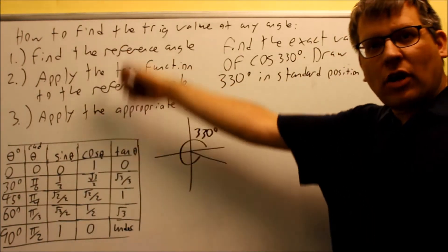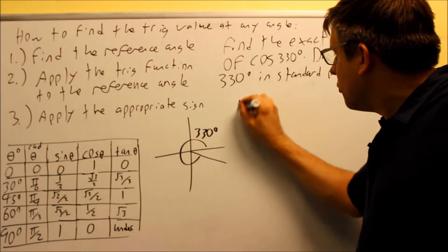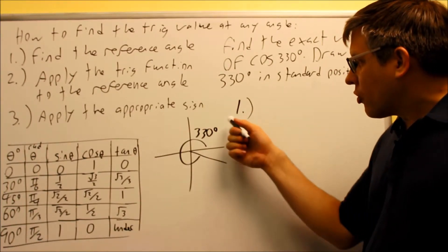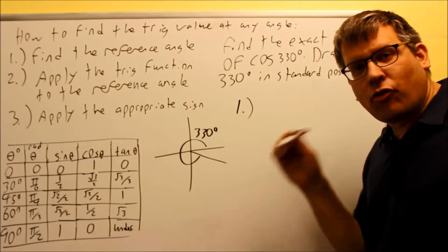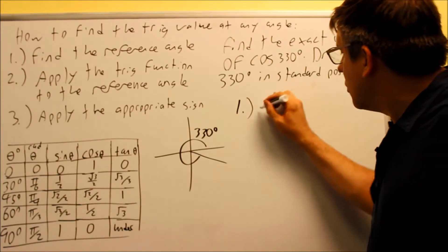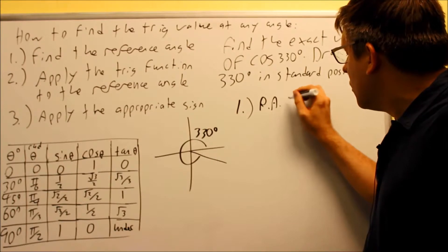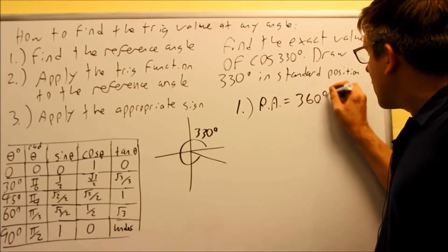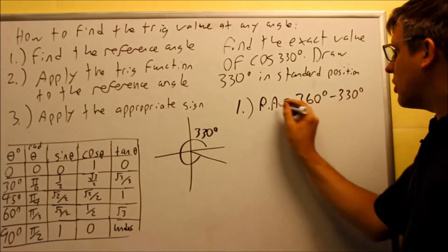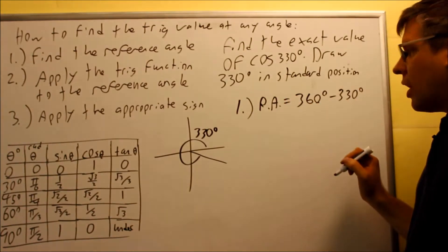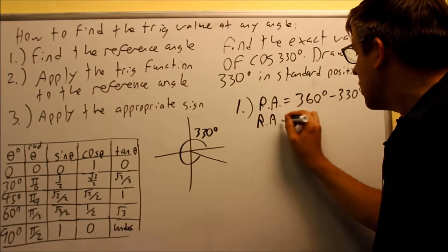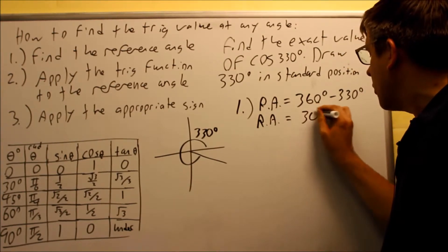To find the exact value, we follow the same three steps. Step one: find the reference angle. We're in the fourth quadrant, so the formula is 360 minus theta. The reference angle equals 360 minus 330. Subtracting those gives us a reference angle of 30 degrees.